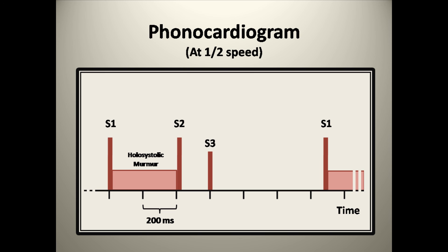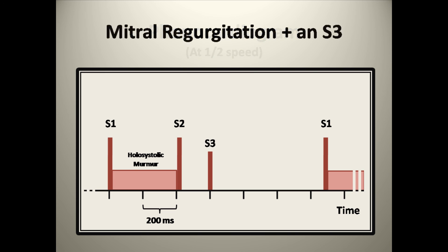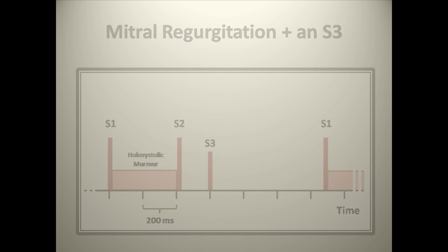So overall, this is an example of mitral regurgitation with a holosystolic murmur and an S3 thrown in, suggestive of the fact that the patient has probably developed congestive heart failure as a consequence. So Tholius, thanks for the great questions, and I hope this helps to clarify things.